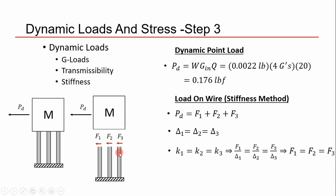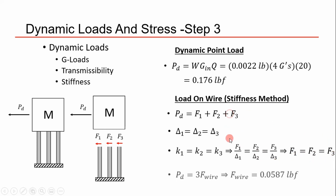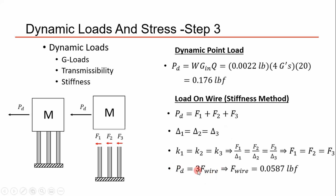The wires are in parallel with the same moment of inertia, same size, and same material, so their stiffnesses are equivalent. Using the stiffness method, the forces transferred to each rod are equal. Plugging the dynamic load back into the equation, we simply get dynamic load equals three times the wire force. Dividing the dynamic load by three gives the end load on each wire.